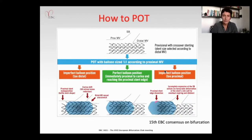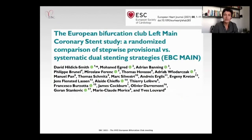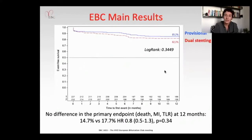Not only is it important to perform POT, but to perform it correctly — an adequate POT. The 15th EBC consensus showed how to perform correct POT with a short non-compliant balloon, with the balloon edge perfectly positioned immediately proximal to the carina and reaching the proximal stent edge. Incorrect balloon positioning distally causes carina shift; too proximal causes incomplete expansion toward the side branch ostium.